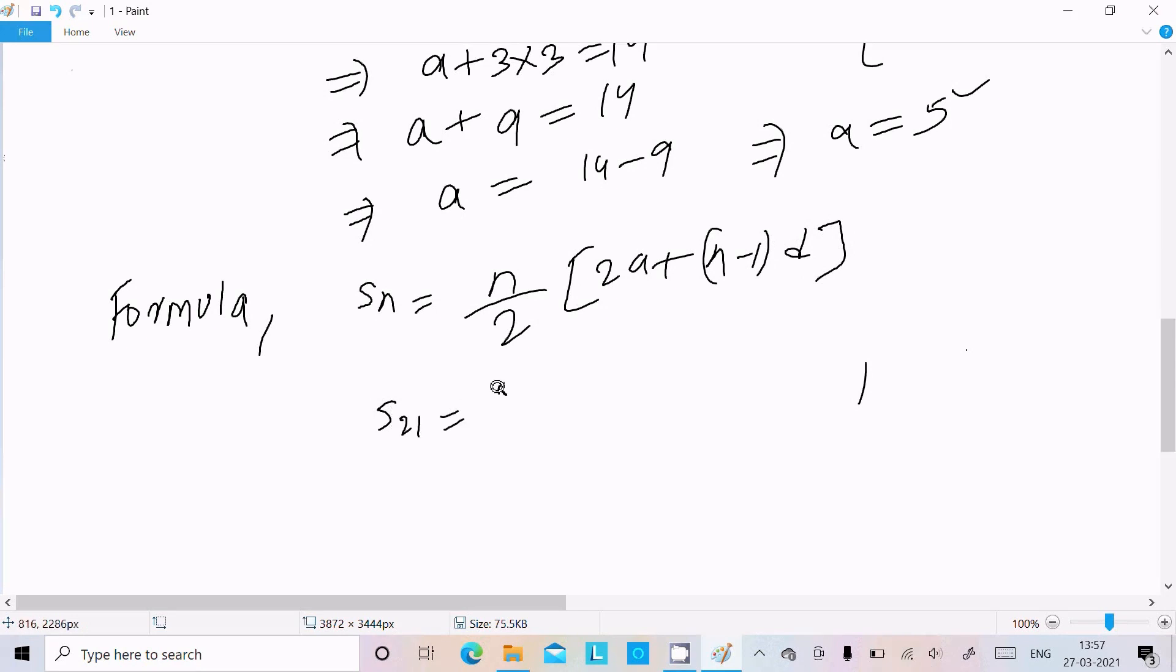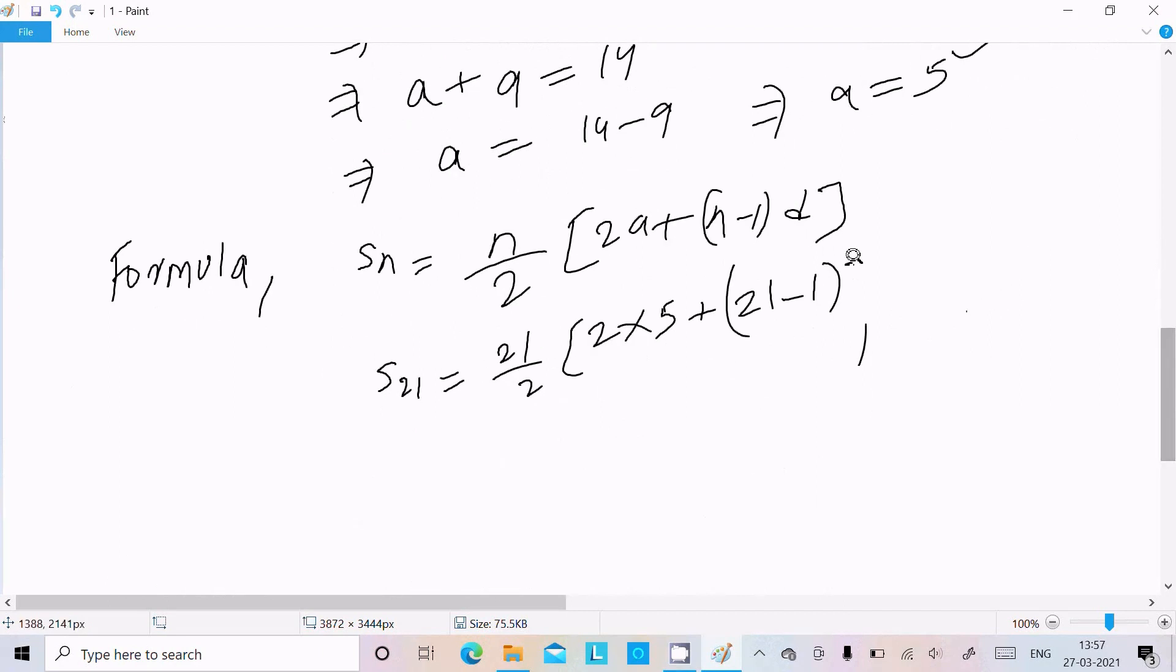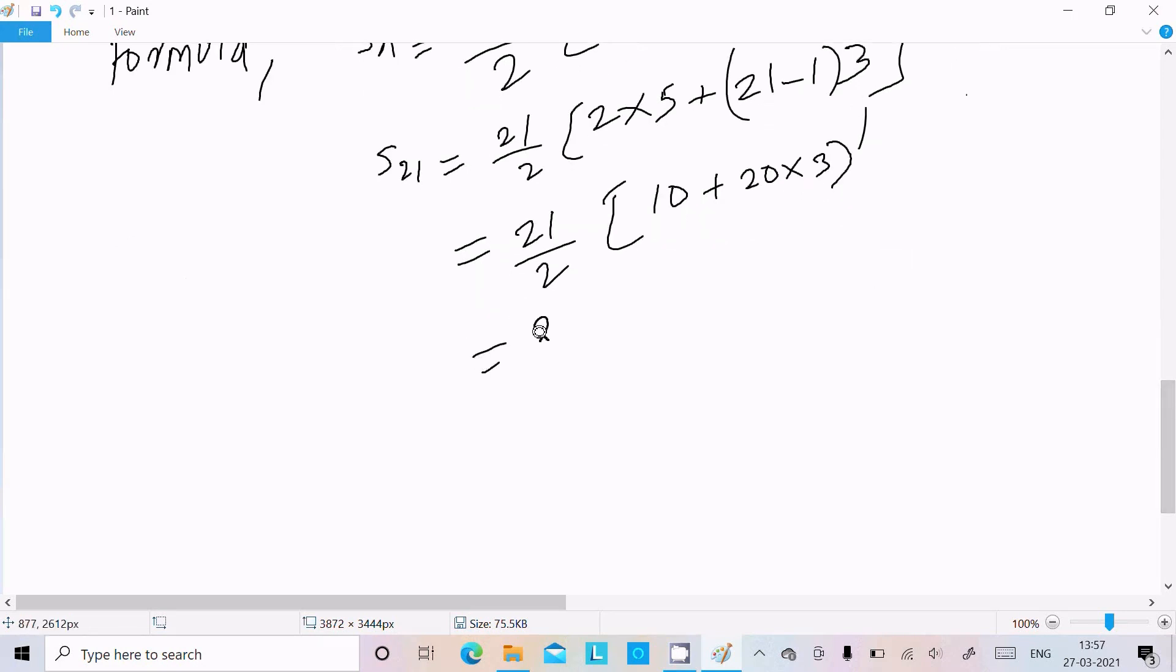So S_21 = (21/2)[2×5 + (21-1)×3]. This becomes (21/2)[10 + 20×3], which is (21/2)[10 + 60].